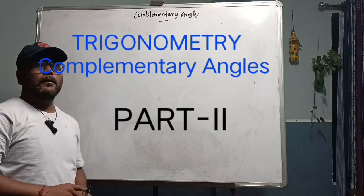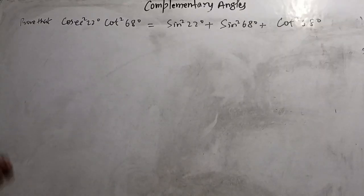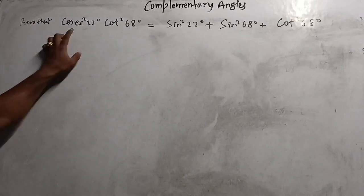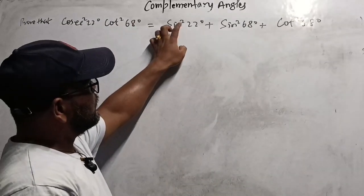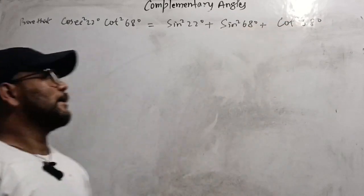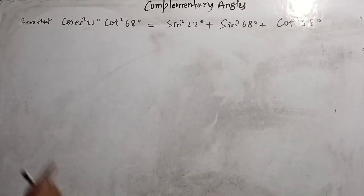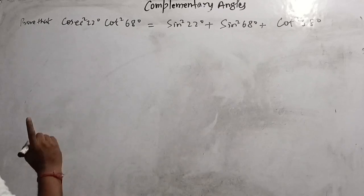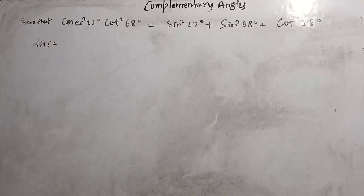Okay students, today's question: prove that cosec²22° + cot²68° equals sin²22° + sin²68° + cot²68°. This question has appeared many times in the board examination, so it is one of the very important questions from this chapter. Watch this video carefully to learn how to solve it.